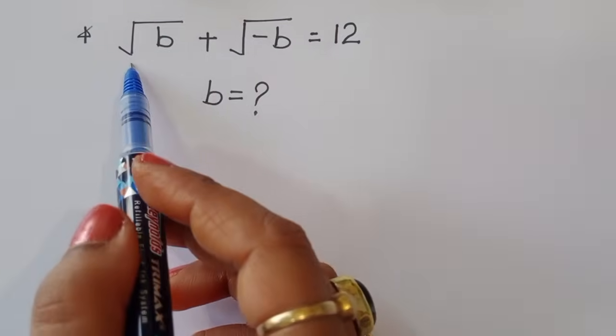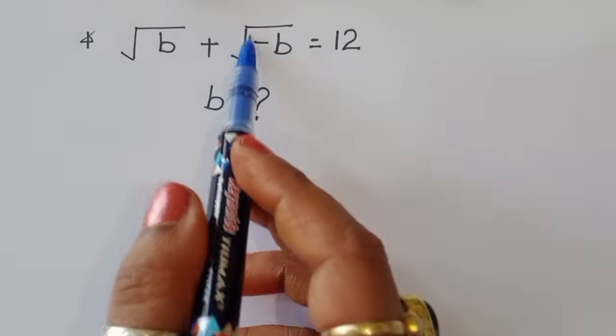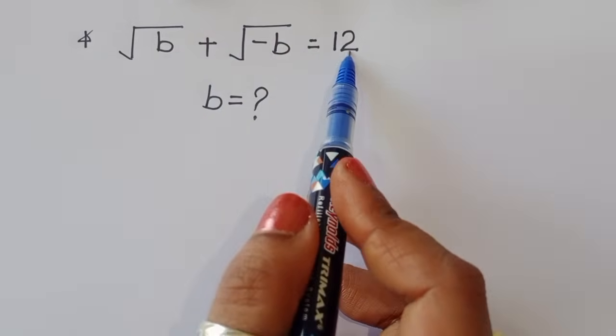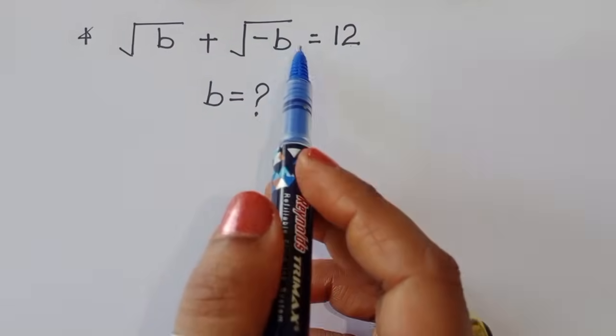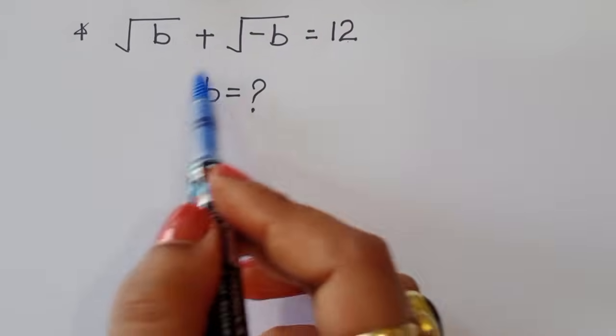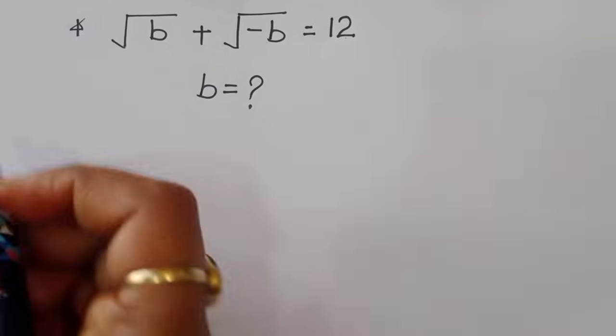The question is: given that the square root of b plus the square root of minus b is equal to 12, we have to find out the value of b. Let's see the solution.